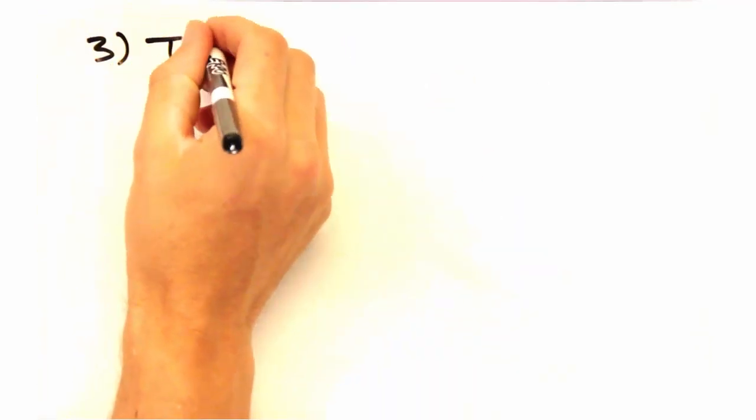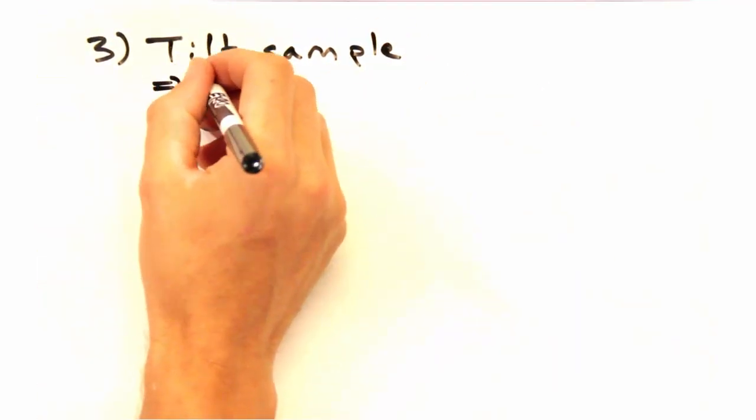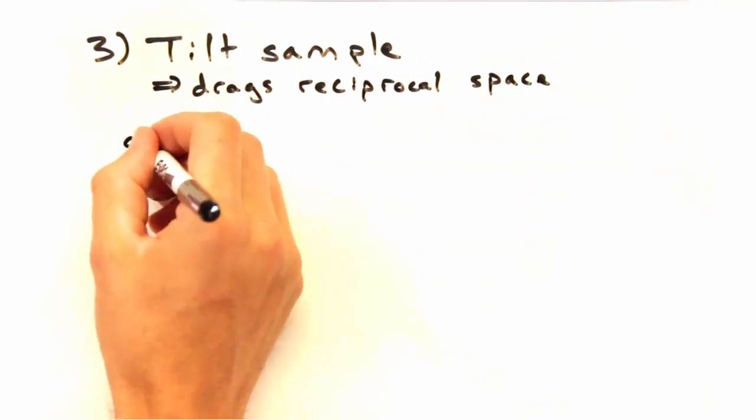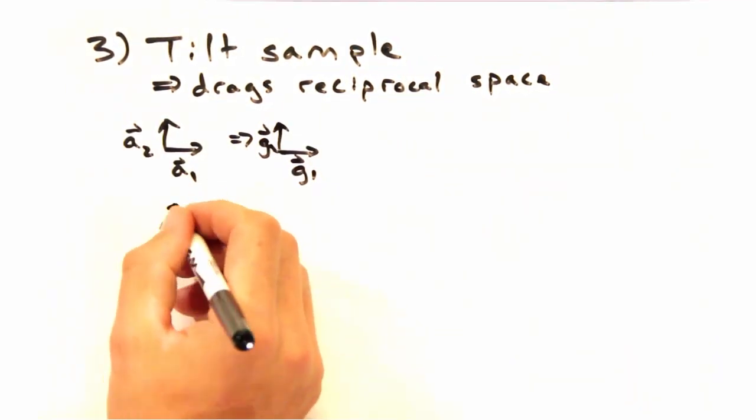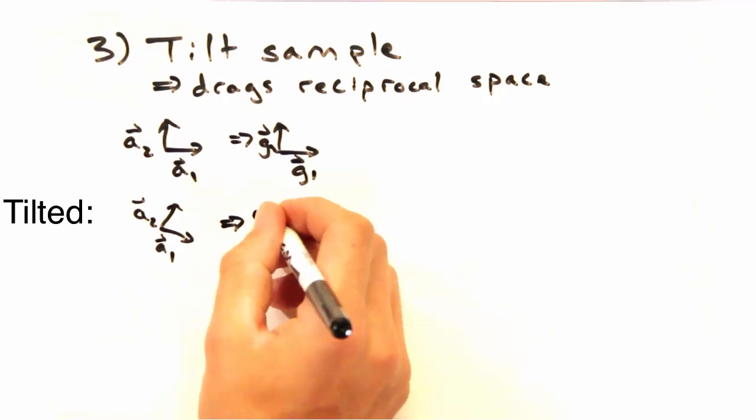Right, and the last thing we could do is tilt the sample. That is, we would have a fixed Ewald Sphere and drag the reciprocal lattice around this delta k surface we mentioned earlier.